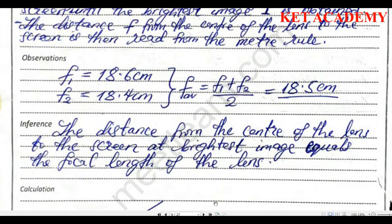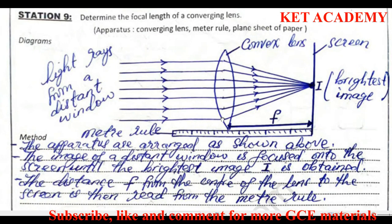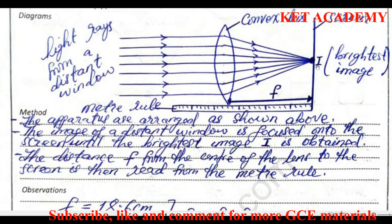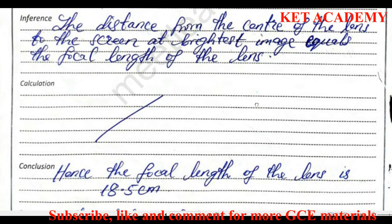Your inference should acknowledge the calculation used. In this case: the distance from the center of the lens to the screen at the brightest image equals the focal length of the lens. As we know from basic knowledge, the focal length is simply the distance from the optical center of a lens to its focal point — that distance f.